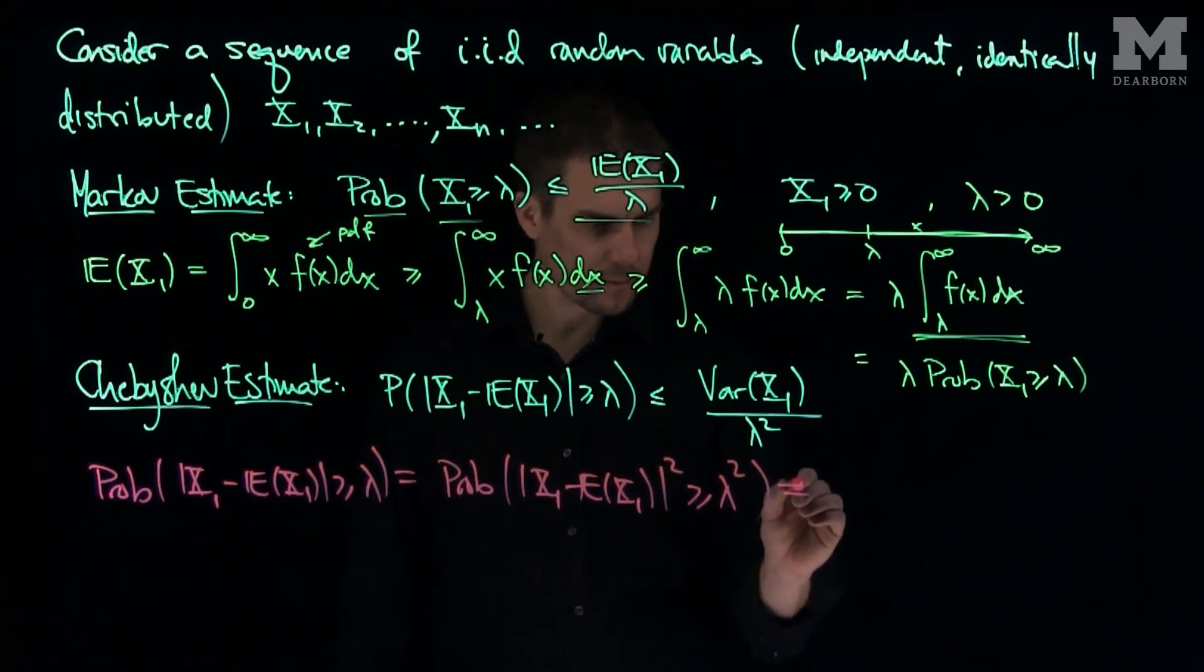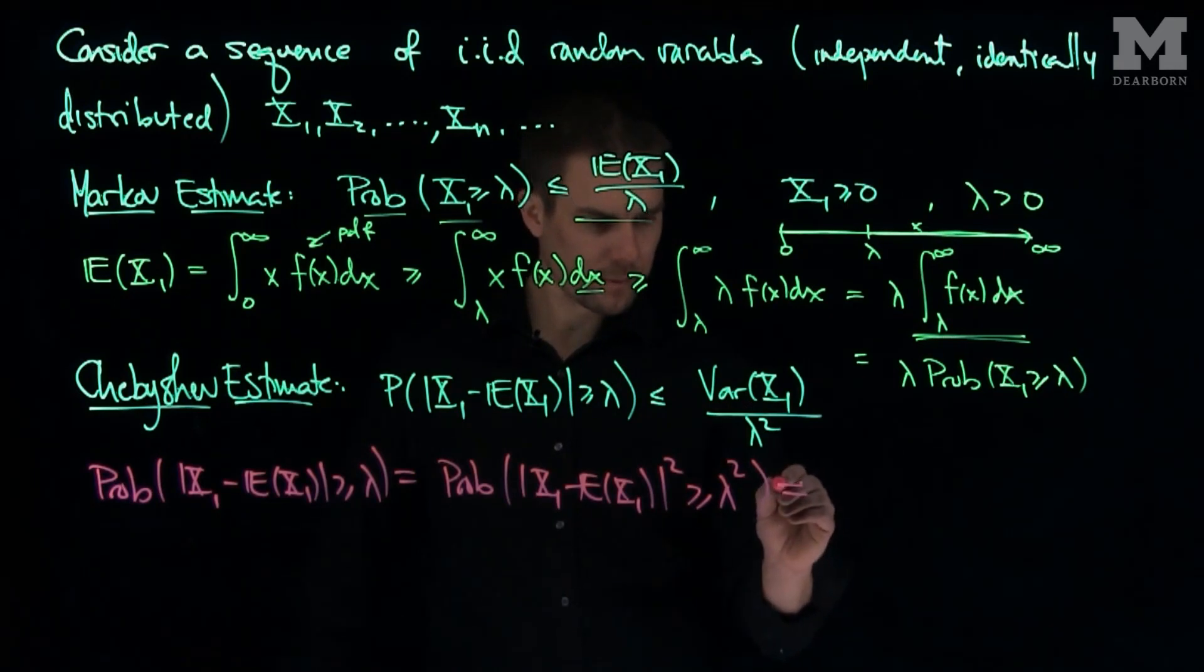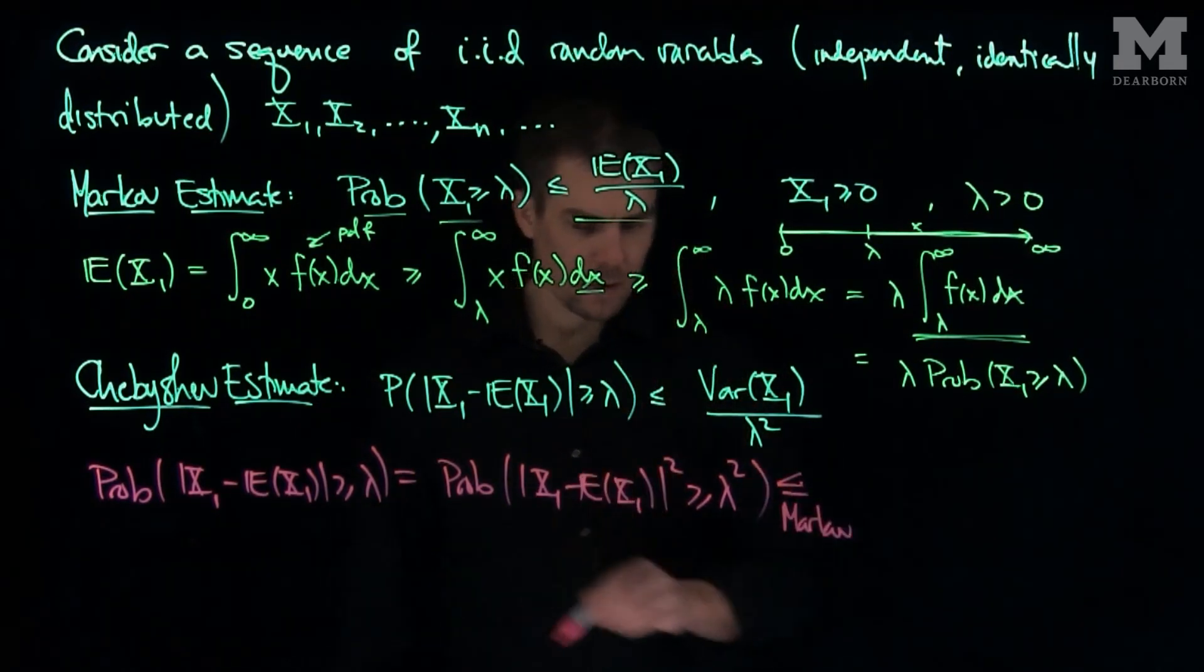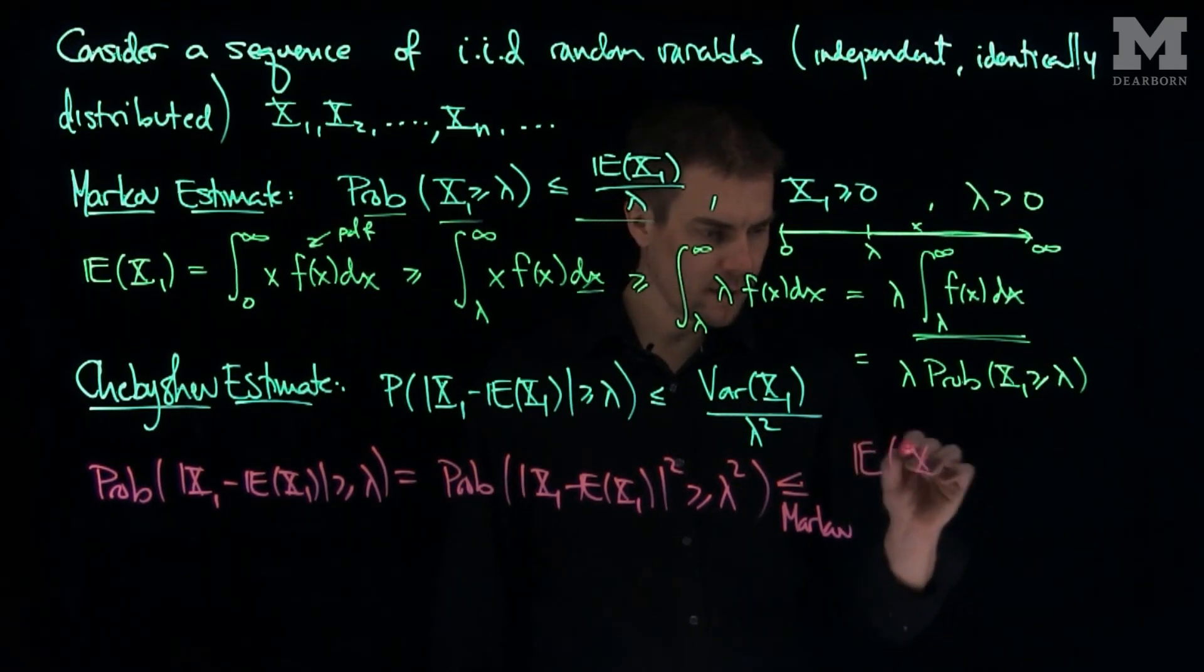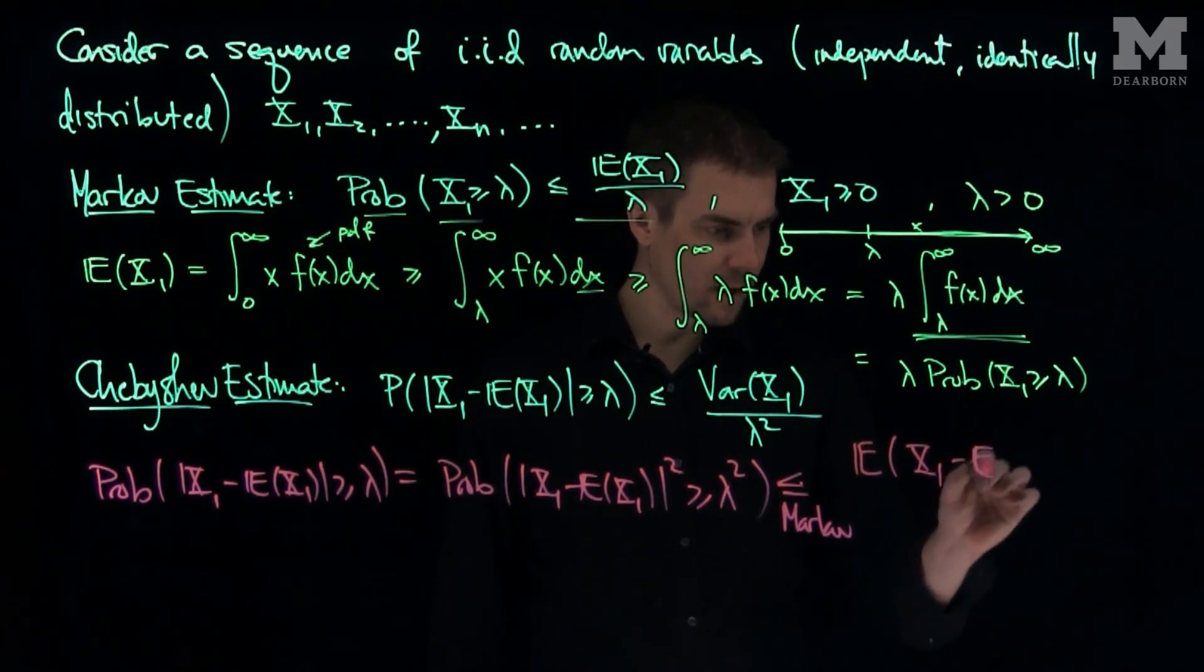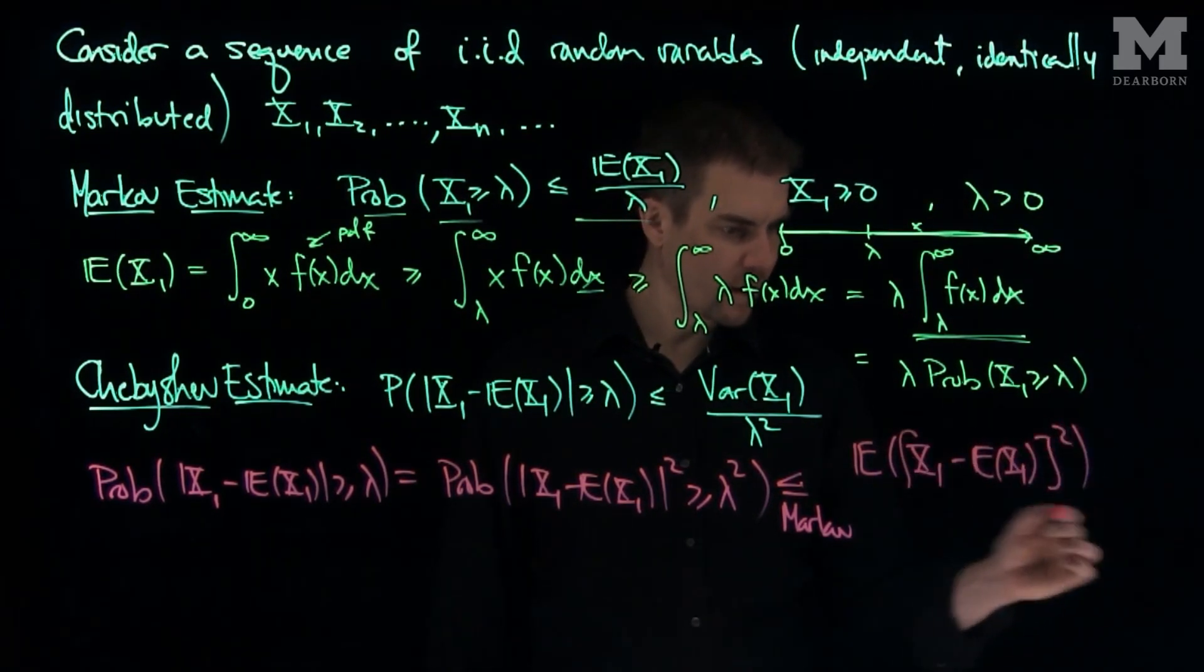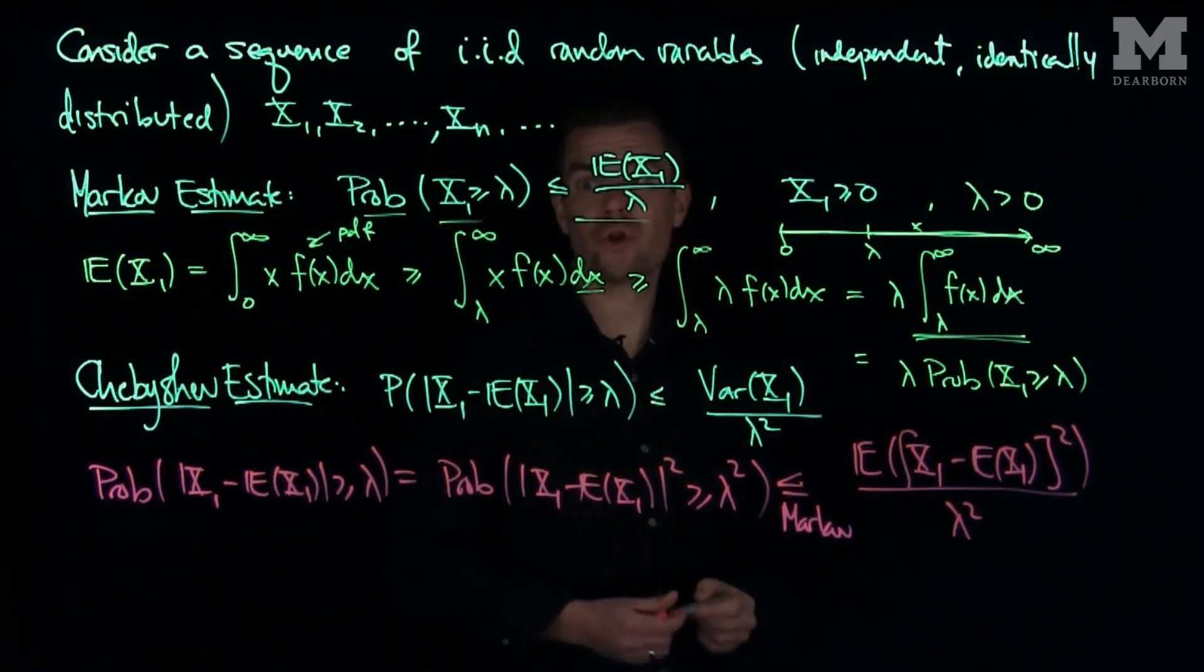So by Markov, this probability is less than or equal to - we'll use Markov here - the expected value of X1 minus the expected value of X1 quantity squared divided by lambda squared. But we should note what?